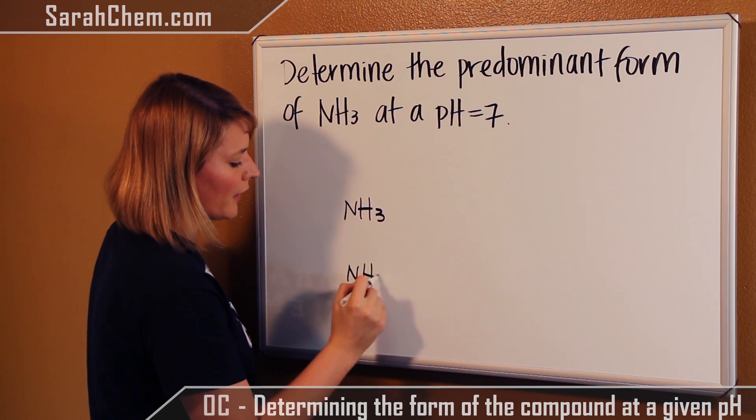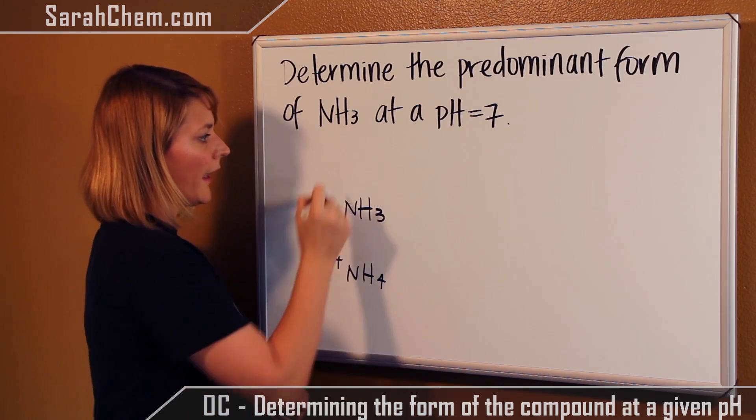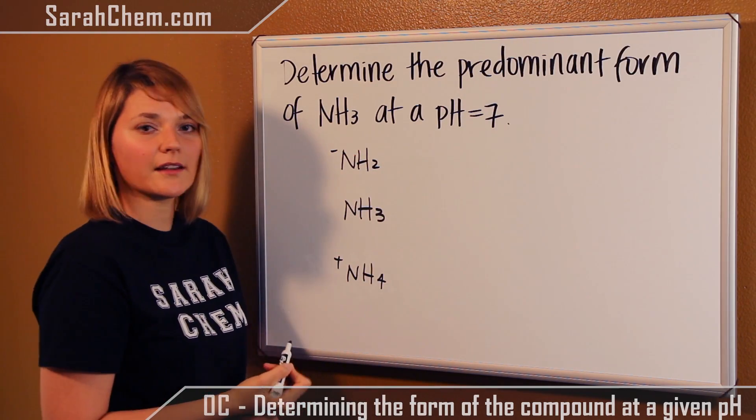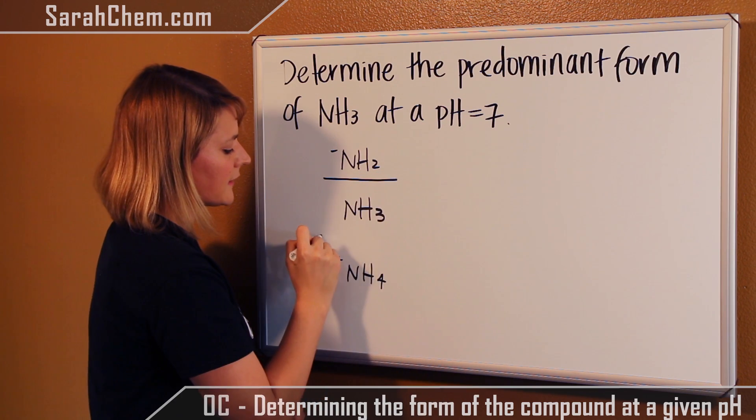Directly below it, we'll put ammonium, NH4+, and above it, we'll put the conjugate base, amide, NH2-. Then we're going to draw a line to separate each one.